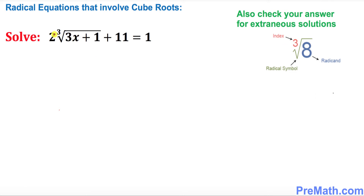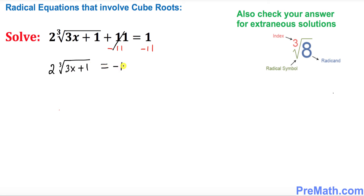Let's go ahead and start solving. We want to get rid of the positive 11, so I'm going to put negative 11 on both sides. This positive and negative 11 cancel, and we end up with 2 times the cube root of (3x + 1) equals negative 10.